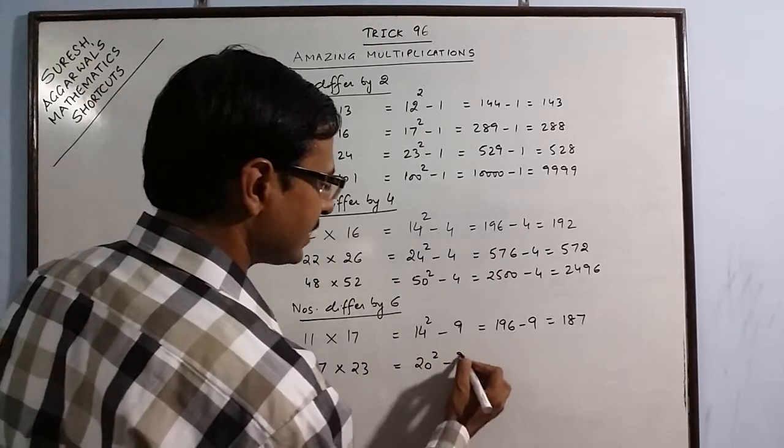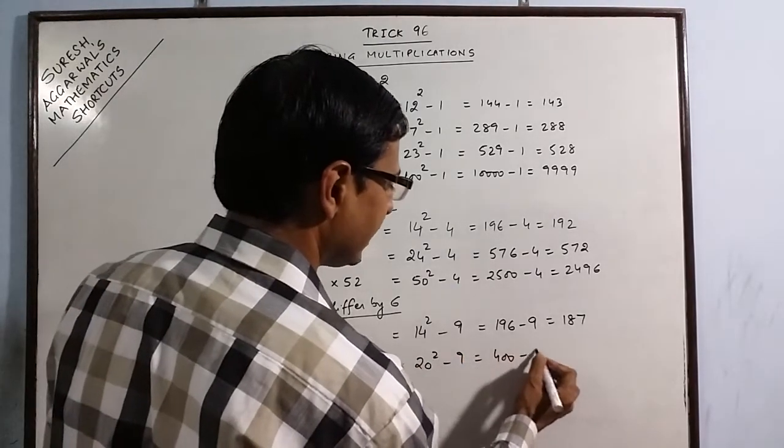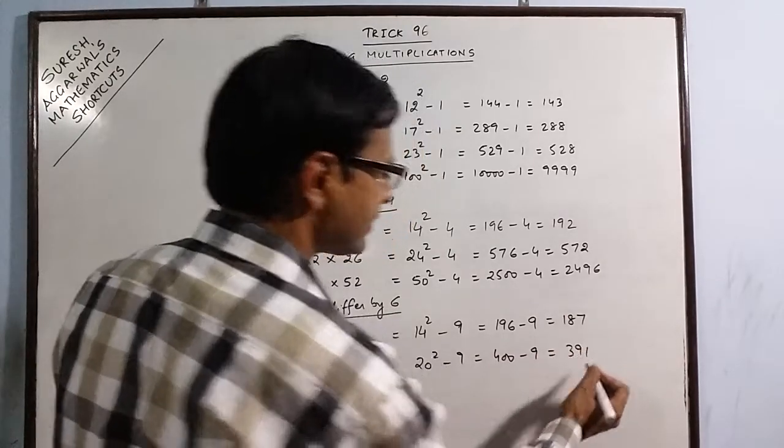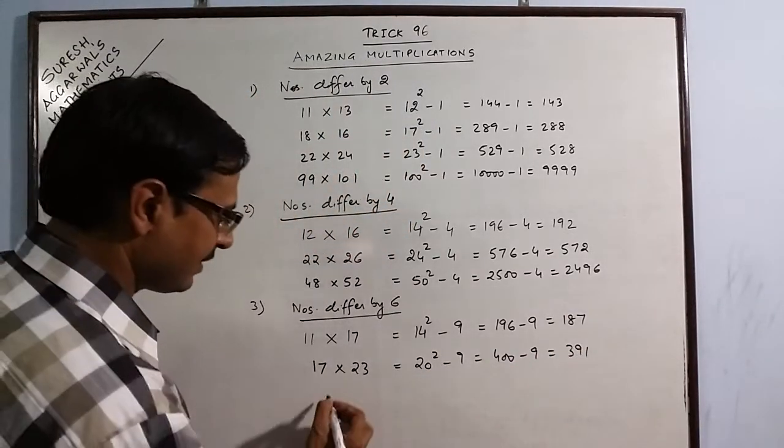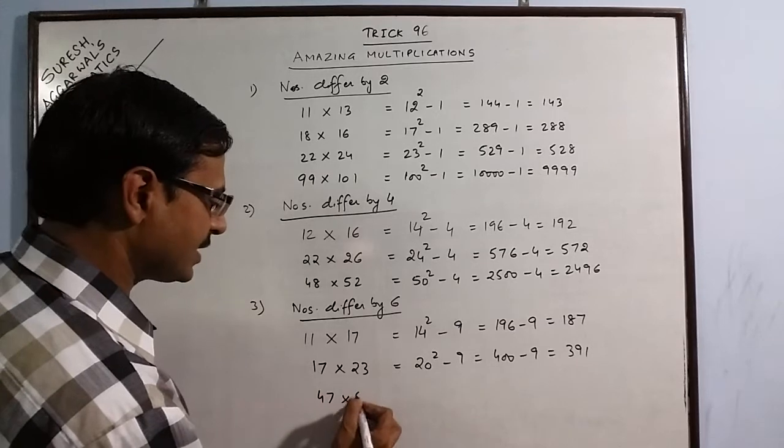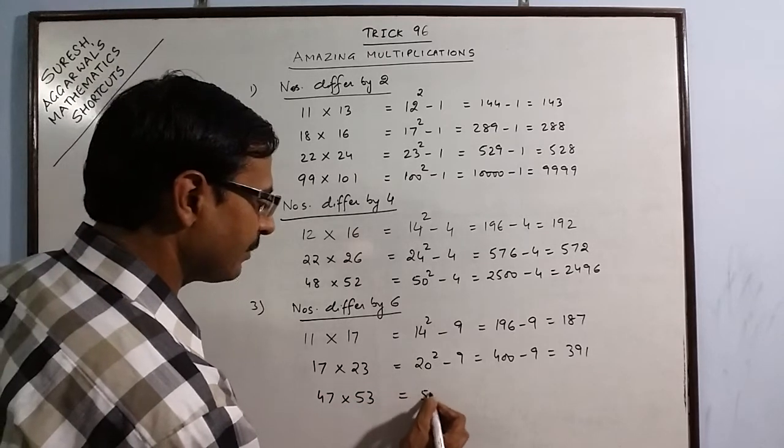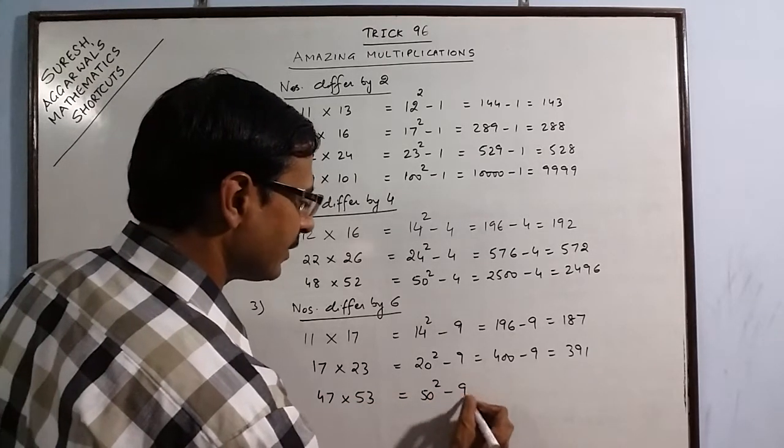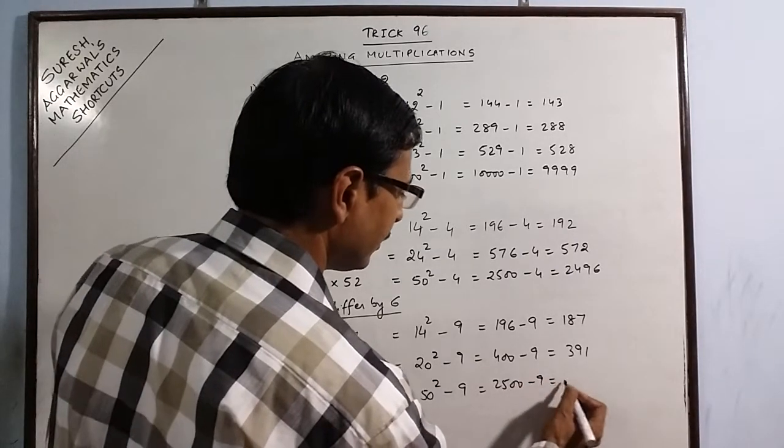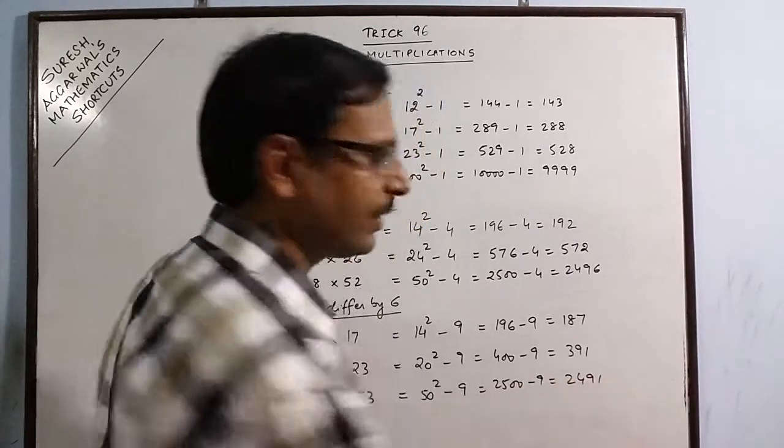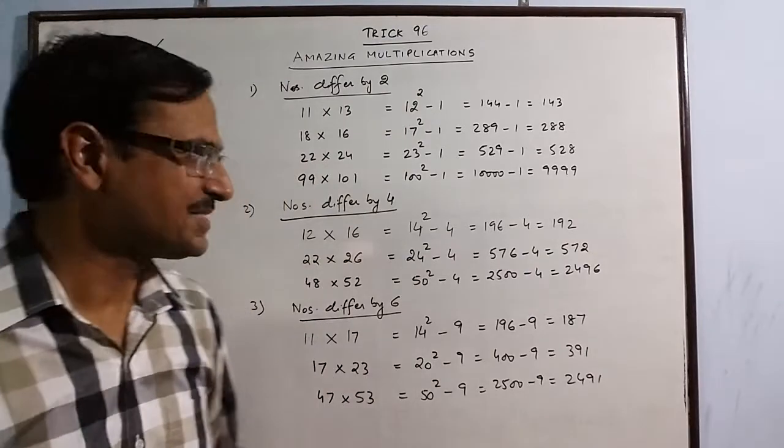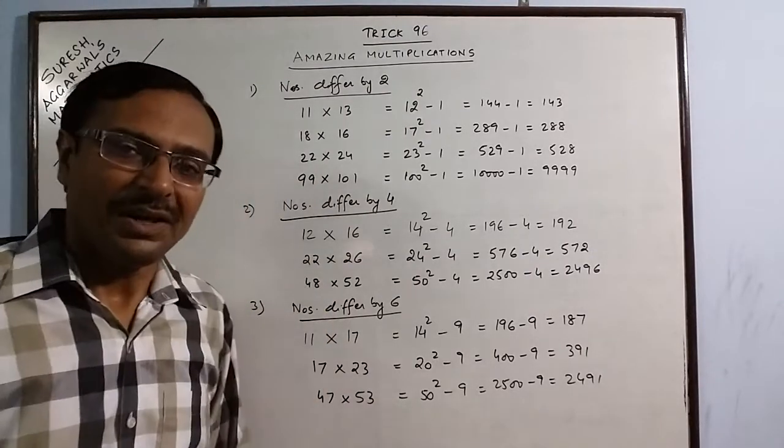Likewise, you have 17 into 23, intermediate number is 20. So 20 square minus 9: 400 minus 9, 391 is the product. Say we have 47 into 53, intermediate number is 50. 50 square minus 9: 2,500 minus 9, 2,491 is the product.